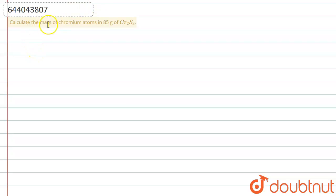Let me explain it to you. Calculate the mass of chromium atoms in 85 grams of chromium sulfite, that is Cr₂S₃. First of all, we will be calculating the molar mass of chromium sulfite Cr₂S₃.